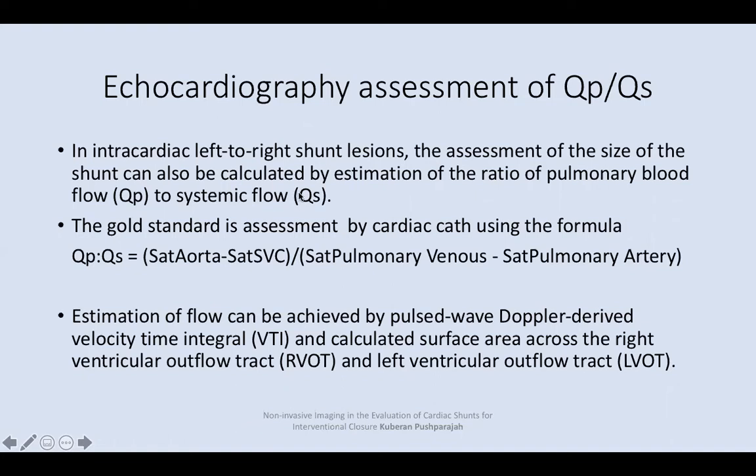The gold standard is measurement by cardiac cath using this equation: Qp/Qs equals saturation of the aorta minus mixed venous saturation, divided by saturation in pulmonary venous minus saturation in pulmonary artery.